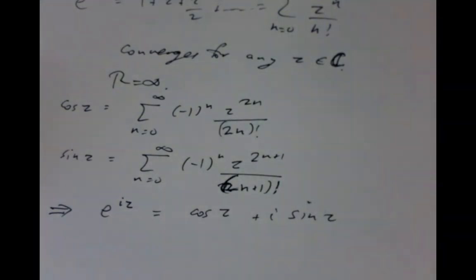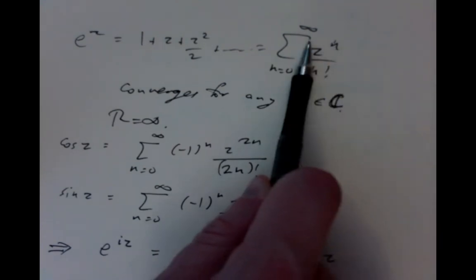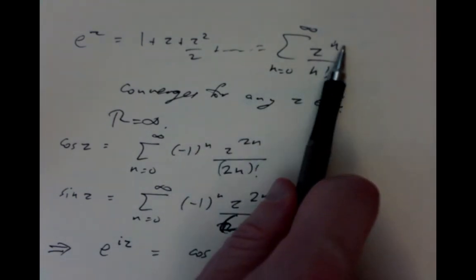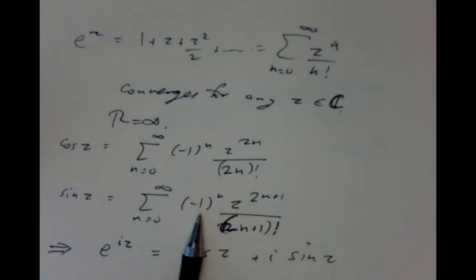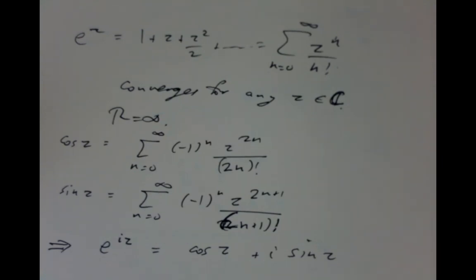When you substitute iz for z in the exponential series, you get i's in every term. When you have an even power, the i's cancel in pairs giving (minus 1), which produces the cosine terms. When the power is odd, you get i times an even number of z's, giving the sine terms with the (minus 1) factor. So you can verify Euler's formula by looking term by term at the series expansions. These expansions are very useful not only for rough approximations but also for seeing algebraic relationships between complicated functions by looking order by order at their series. In the next lecture we'll look at vectors.